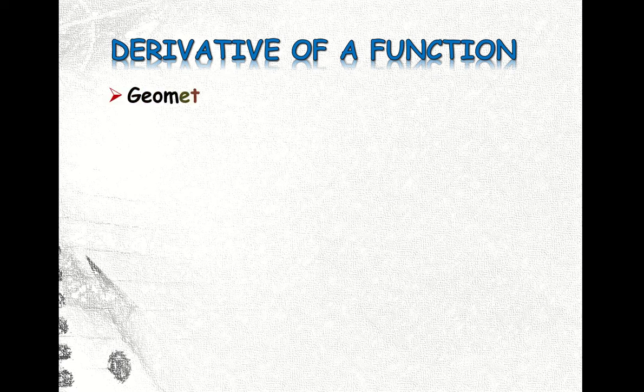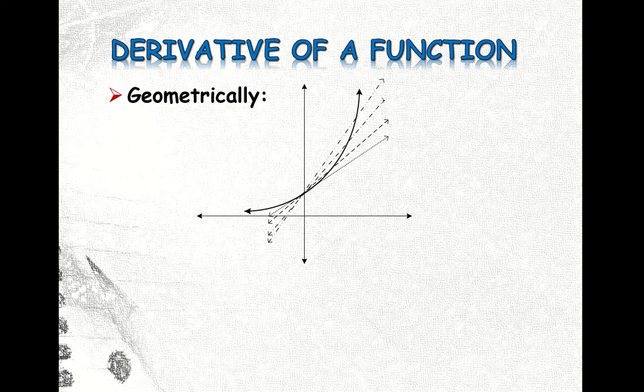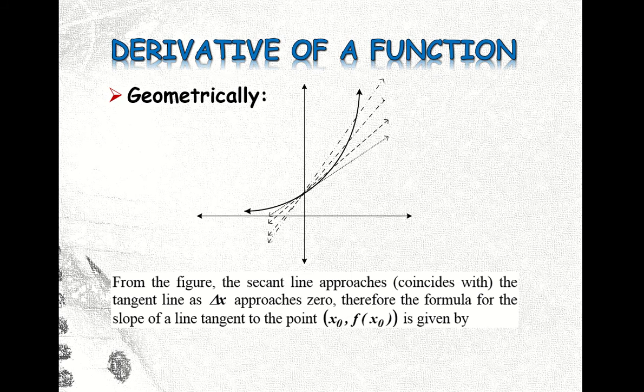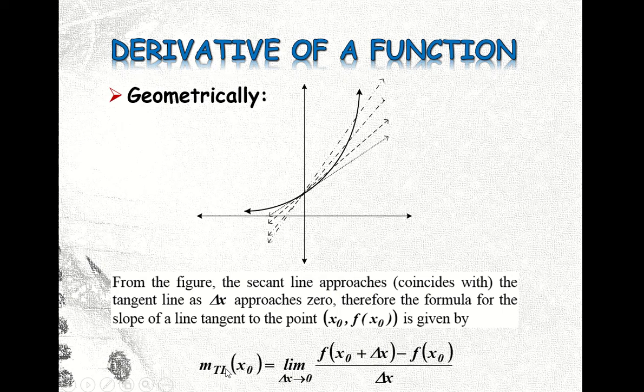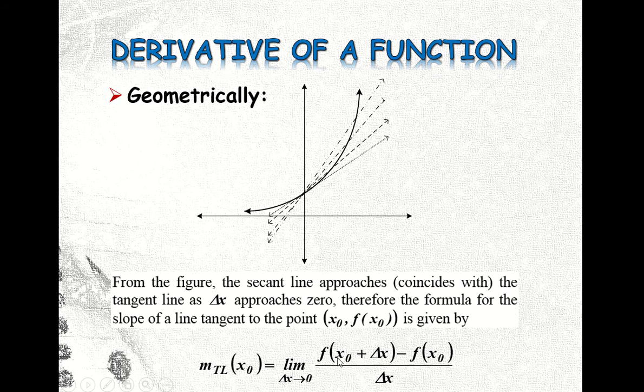So last time we discussed this illustration here, that the derivative of a function can be represented geometrically. I'll not give you the details on this one, just review the previous video. And from here we have derived this equation of the slope of the tangent line, given in this limit of the function.